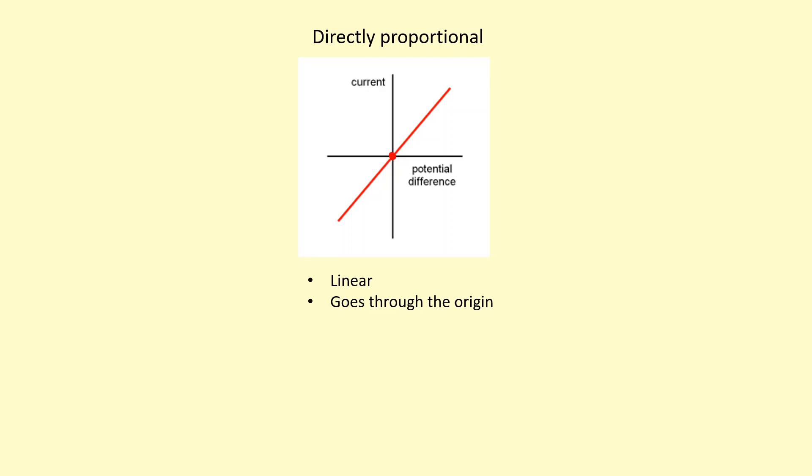Let's look at some examples that are not directly proportional. So in this case, it goes to the origin, goes through (0, 0), and as the potential difference increases, the current also increases. However, this is not linear. So therefore, this doesn't follow Ohm's law. So as one thing doubles, the other one doesn't necessarily have to double.